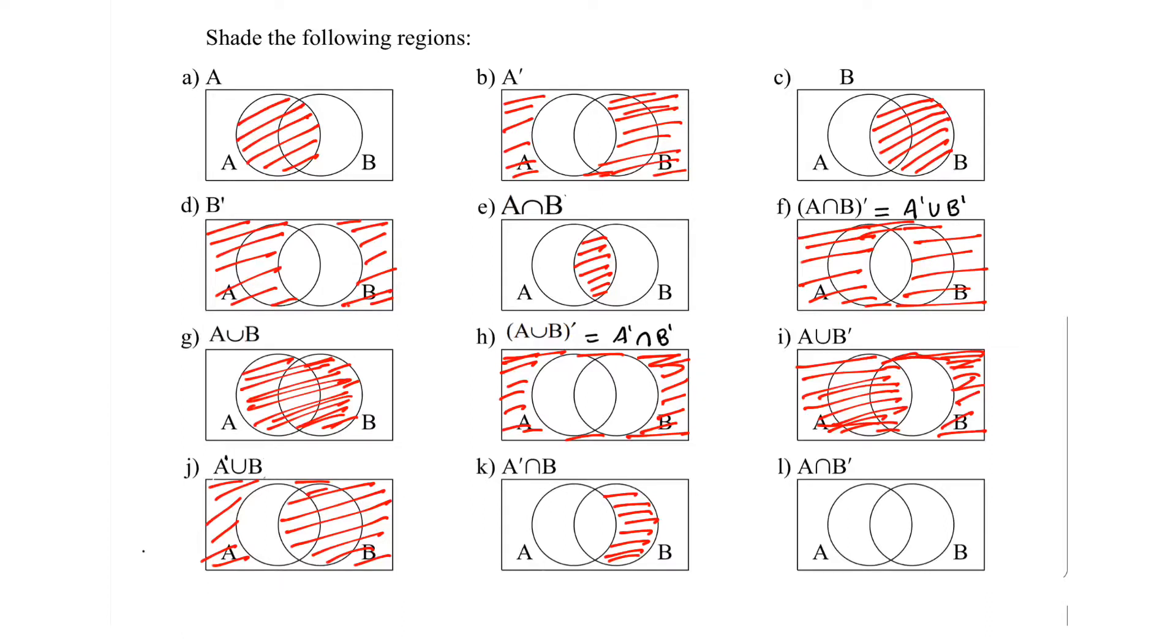And what about the next question? A intersects not B. From the previous question you must have understood when it is A intersection not B. It means the only A part. And we shaded it.